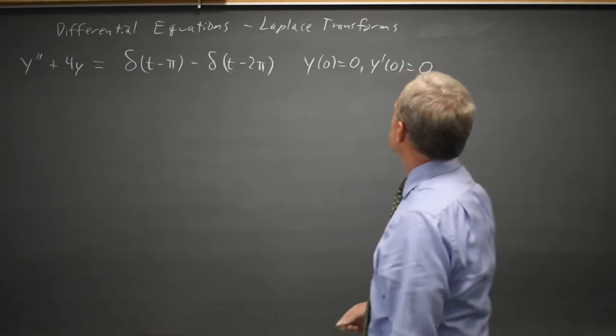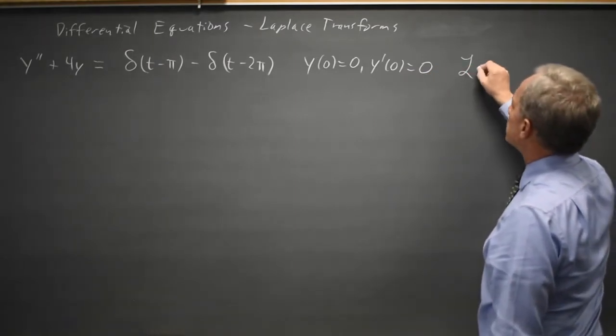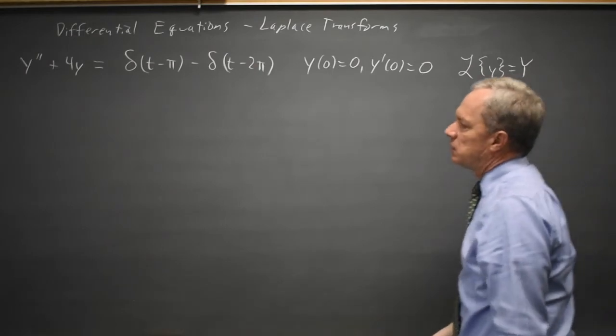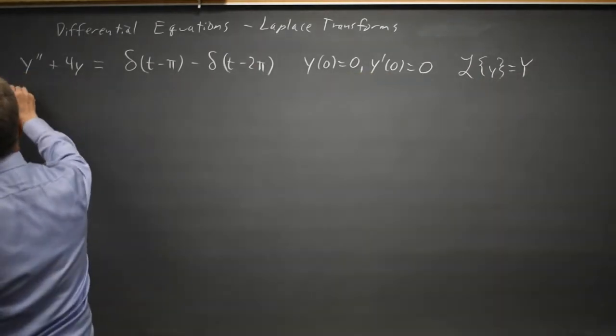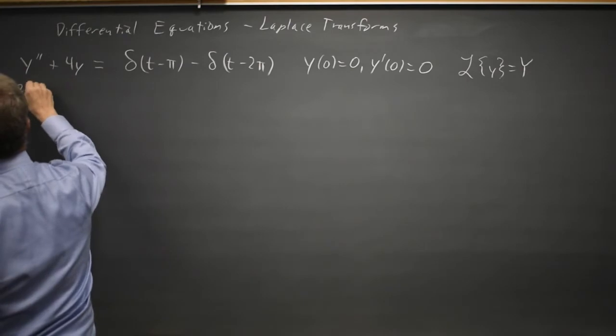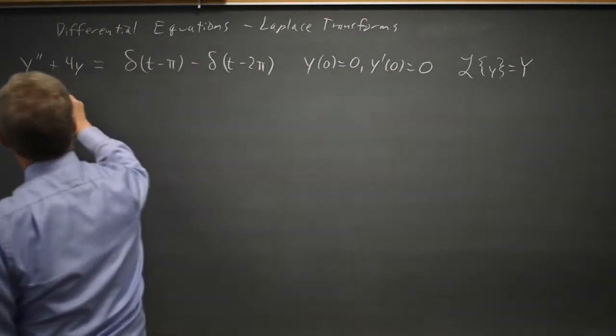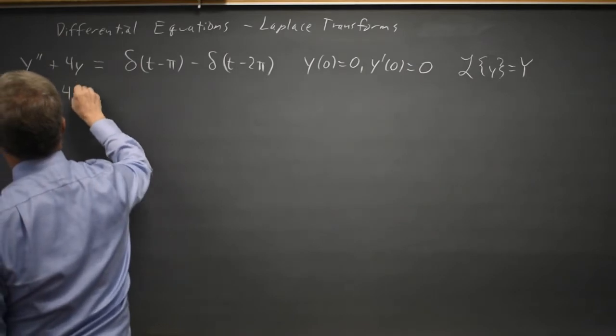I'm going to use the notation that the transform of lowercase y equals uppercase Y, because that's easier to write. So the transform of y double prime is s squared uppercase Y minus s times 0 minus 0, and then plus 4 times the transform of y.